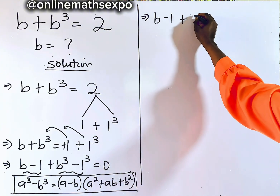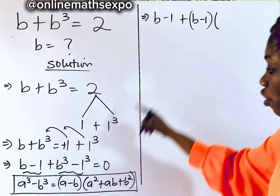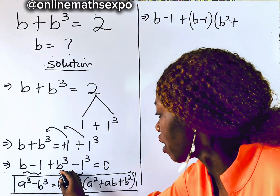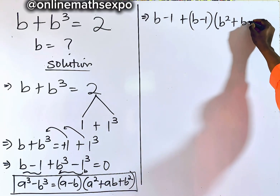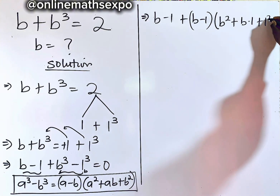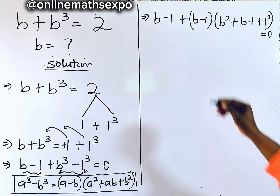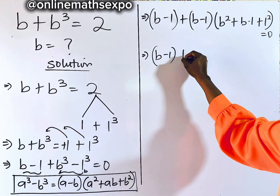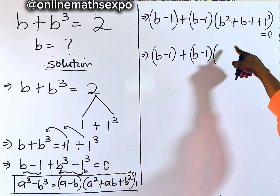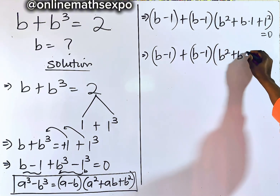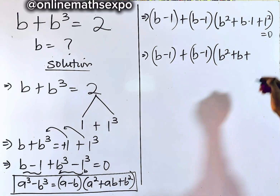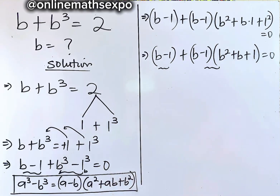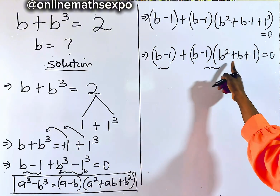Applying the identity: the first group (b − 1³) gives us the factor (b − 1). For the second part, obeying the identity, we have (b − 1) multiplied by (b² + b·1 + 1²), and 1² is just 1, so everything equals zero.